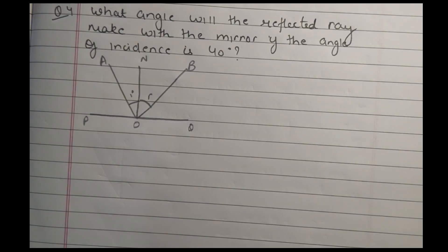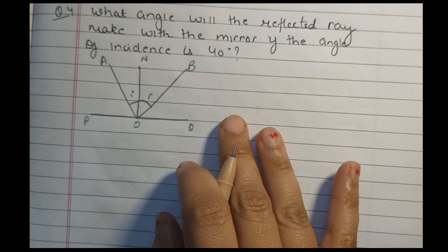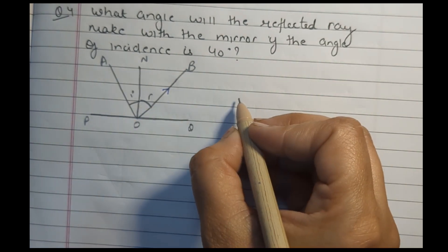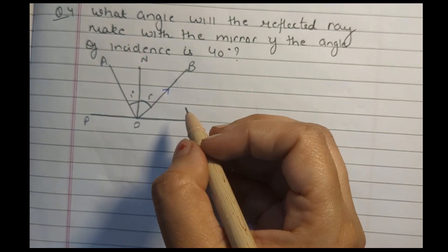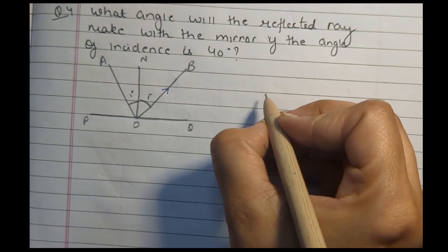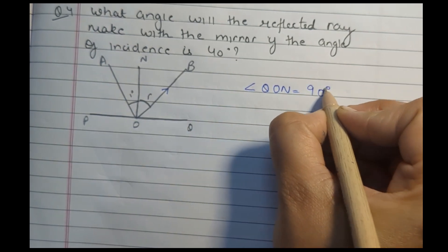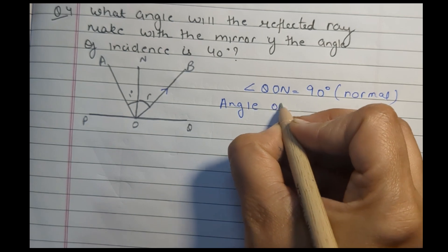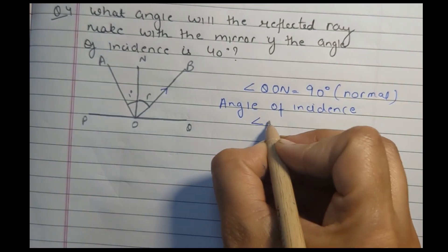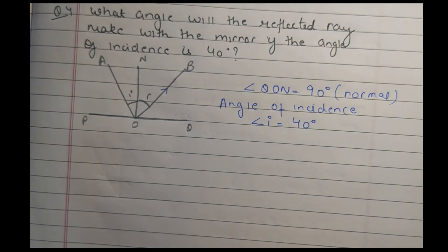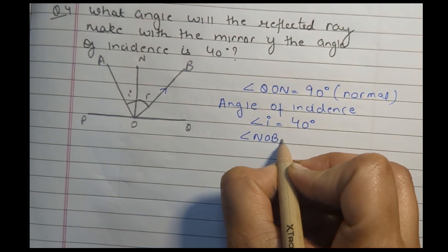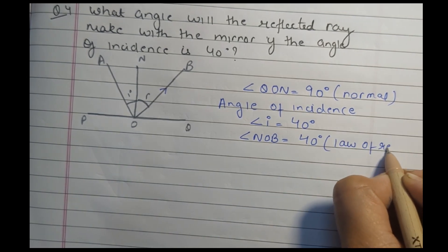Question 4: what angle will the reflected ray make with the mirror if the angle of incidence is 40 degrees? The reflected ray is OB and the mirror surface is PQ. We know the normal ray is perpendicular to the surface, so angle QON is equal to 90 degrees. The angle of incidence is 40 degrees. According to the law of reflection, angle NOB is also equal to 40 degrees.